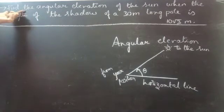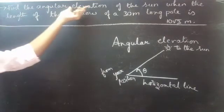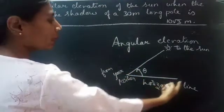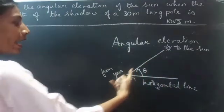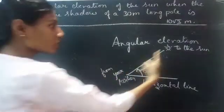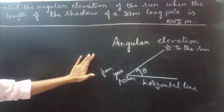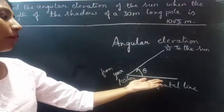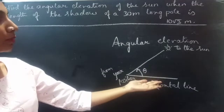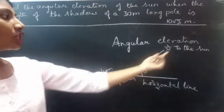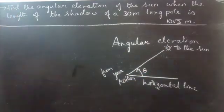We have to find the angular elevation of the sun. Angular elevation of the sun is nothing but the angle formed by the horizontal line and the line formed from your position to the sun. The angle formed between the horizontal line and the line formed from your position to the sun is your angular elevation.